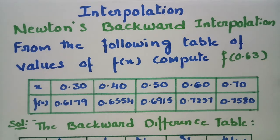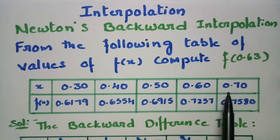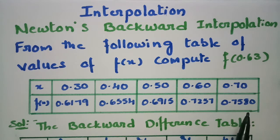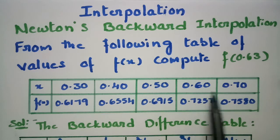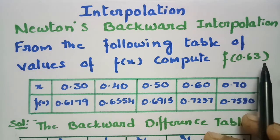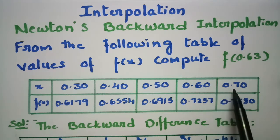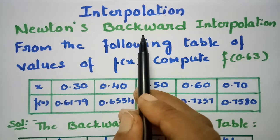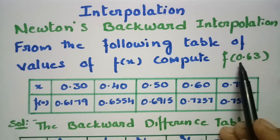Today's topic is interpolation. Using Newton's backward interpolation formula, I am going to calculate today's problem. From the following table, the x values are 0.3, 0.4, 0.5, 0.6, 0.7, and f(x) values are given. We have to compute the value of f(x) at x = 0.63, which lies in between these values. Since these are the last values, I am using Newton's backward interpolation formula.